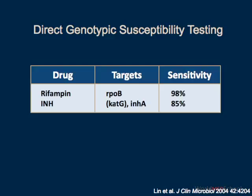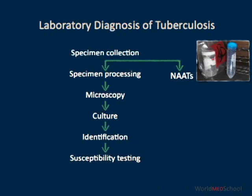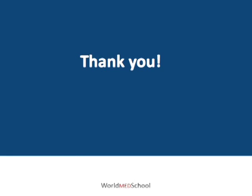As an example, genotypic testing for rifampin has a sensitivity of 98%, and for isoniazid the sensitivity is about 85%. In conclusion and summary, laboratory diagnosis of tuberculosis by conventional methods is a multi-step process that is both lengthy and laborious. However, one can use nucleic acid amplification tests to simplify and speed up this process and provide a more timely diagnosis of tuberculosis.